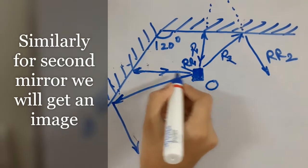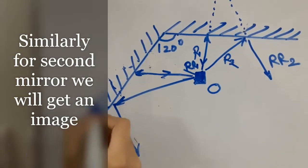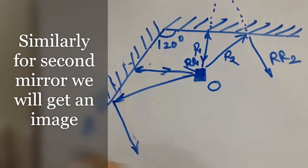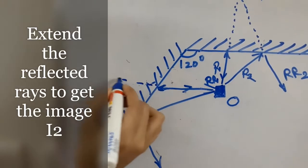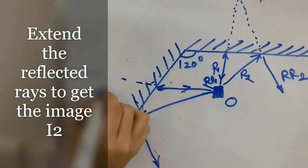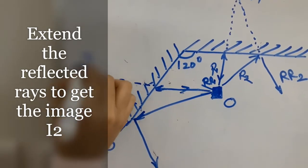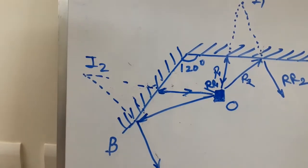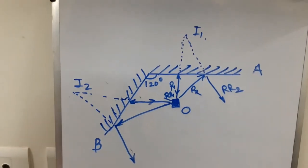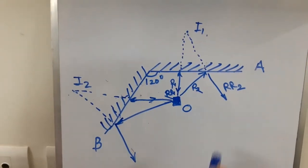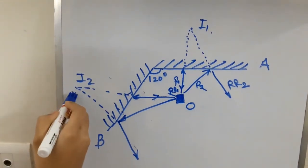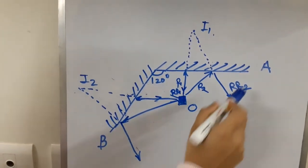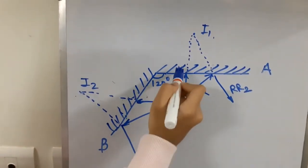In the same way, the incident rays will fall on mirror B and get reflected. If we extend these reflected rays, they will meet at a point I2 where the image 2 is formed. In this way, two images are formed. Image 1 and image 2 when the mirrors are placed at an angle of 120 degrees.